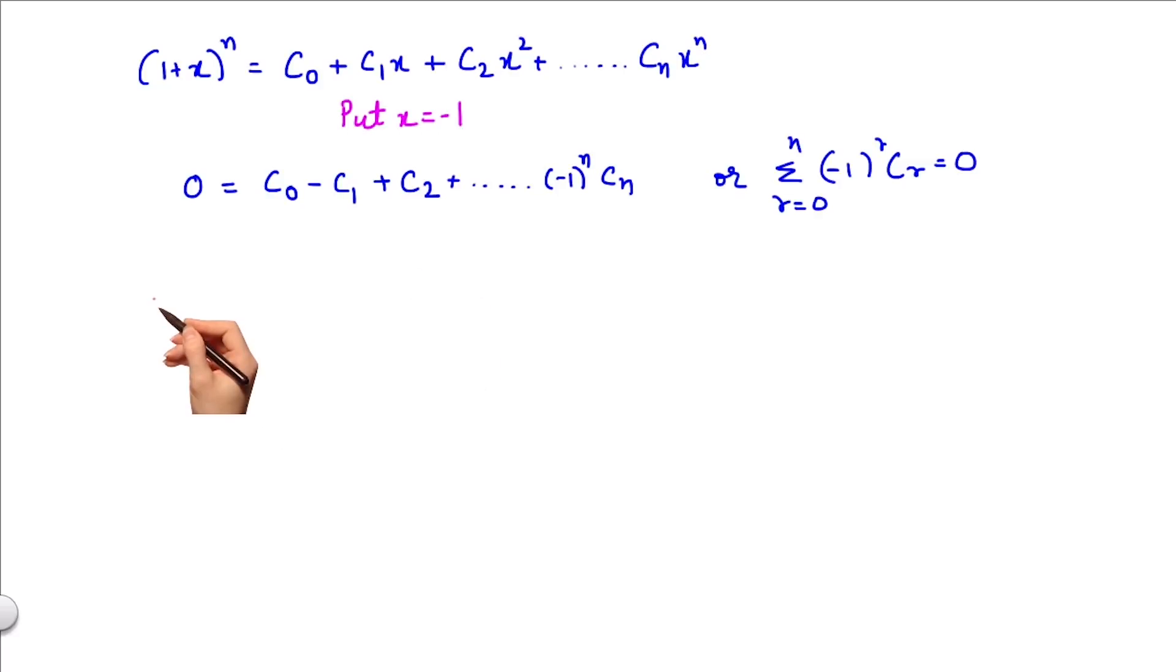Now let us find the sum of the series 1c₁ minus 2c₂ plus 3c₃ until (-1)^n ncₙ. Let's try and use the calculus method to solve this problem.